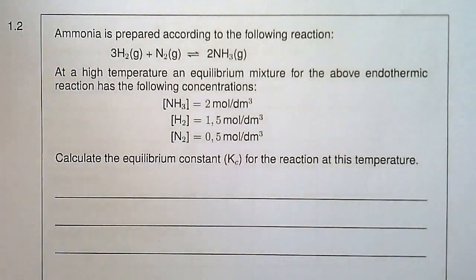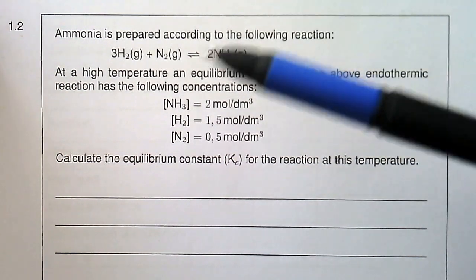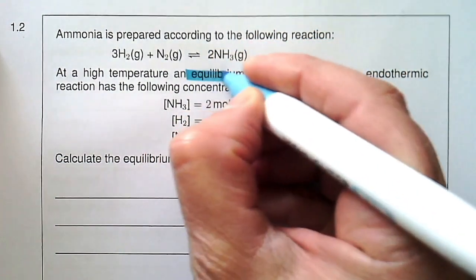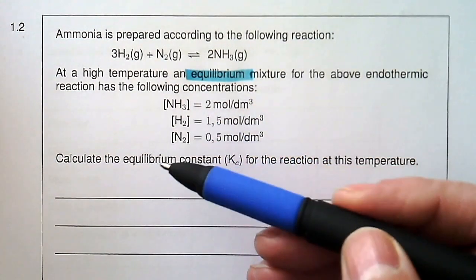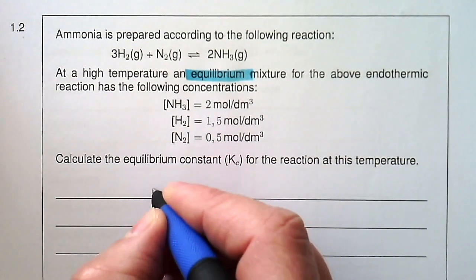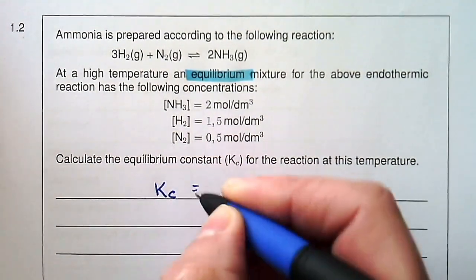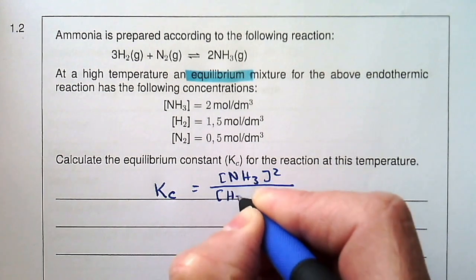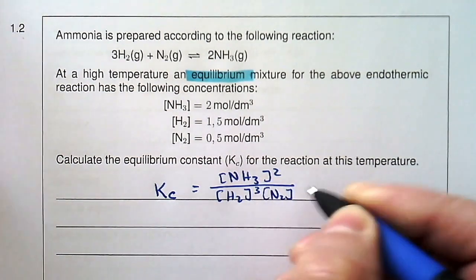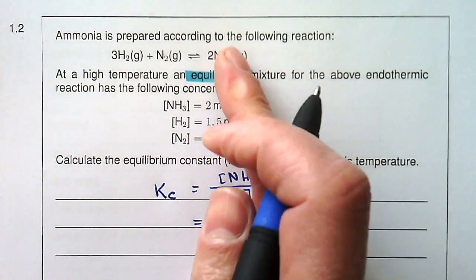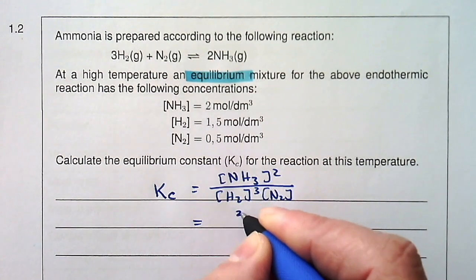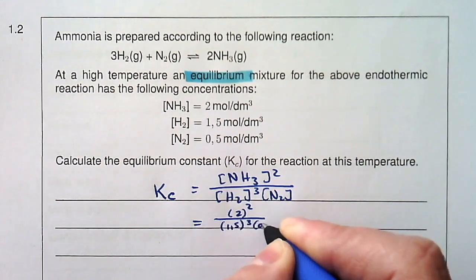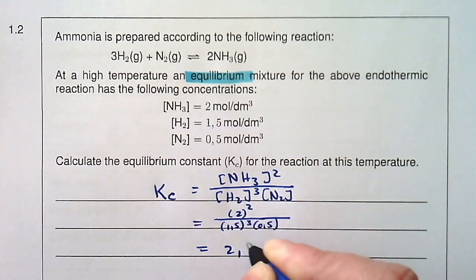In question 1.2, ammonia is prepared according to a given reaction. At high temperature, they give you equilibrium concentrations — and this is very important: the values given are true at equilibrium, because the equilibrium constant requires equilibrium concentrations. The Kc expression is [NH3] squared divided by [H2] cubed times [N2]. Substituting the equilibrium values: 2 squared divided by 1.5 cubed times 0.5. Working that out gives a Kc of 2.37.